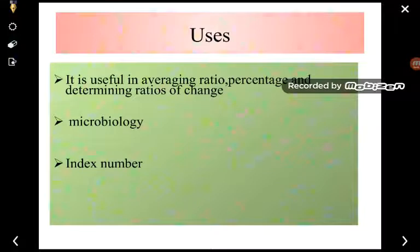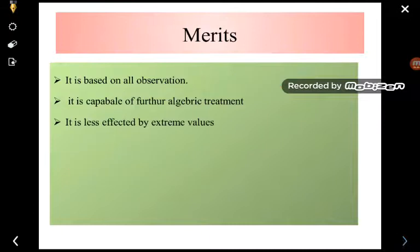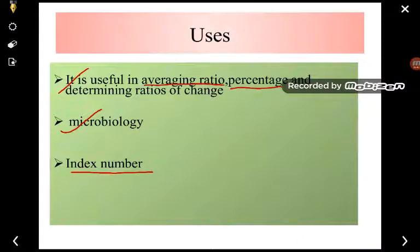What are the uses of the geometric mean? It is useful in averaging ratios. If you want to find out the average of ratios or percentages, then this is very useful. This is normally used in the field of microbiology. And the third one is that it is important in construction of index numbers.